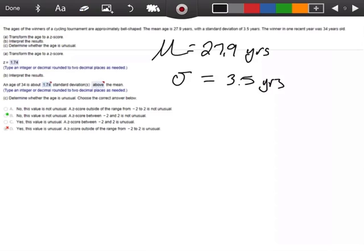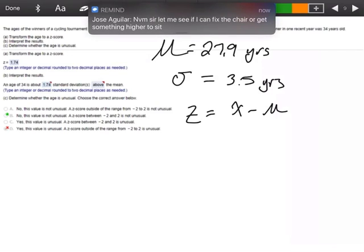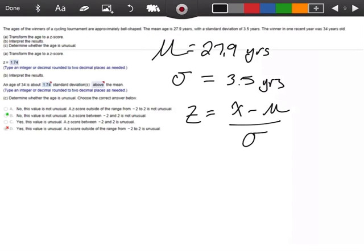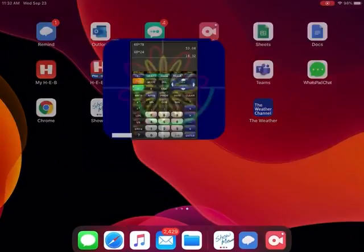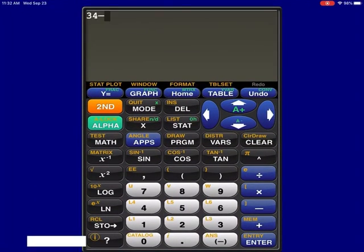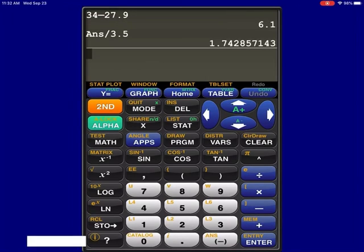It says transform this to a Z-score. So the formula for my Z-score is going to be X minus mu divided by sigma. My X-value in this case is going to be 34. So I'm going to write 34 minus 27.9 divided by 3.5. Let me do this on the calculator: 34 minus 27.9 equals divided by 3.5 equals. I'm coming up with 1.74.